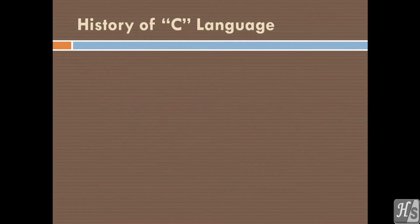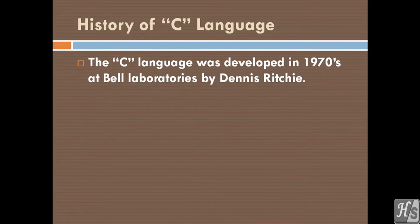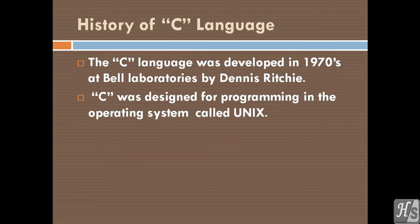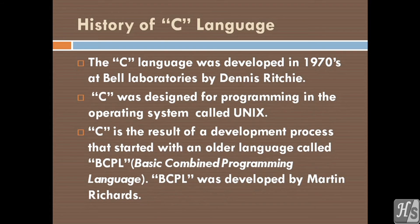History of C language. The C language was developed in 1970s at Bell Laboratories by Dennis Ritchie. Initially it was designed for programming in the operating system called Unix. C is the result of a development process that started with an older language called BCPL. BCPL was developed by Martin Richards.